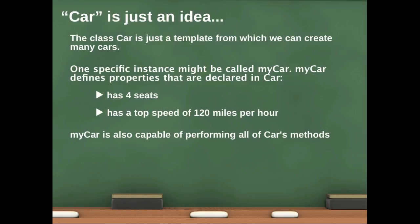myCar is also capable of performing all of car's methods. So we define the properties that are declared in car. In other words, car just had maybe an int property called seats, but in myCar we assign the value four to seats, and that way we know that myCar has four seats. Somebody else's car might only have two.